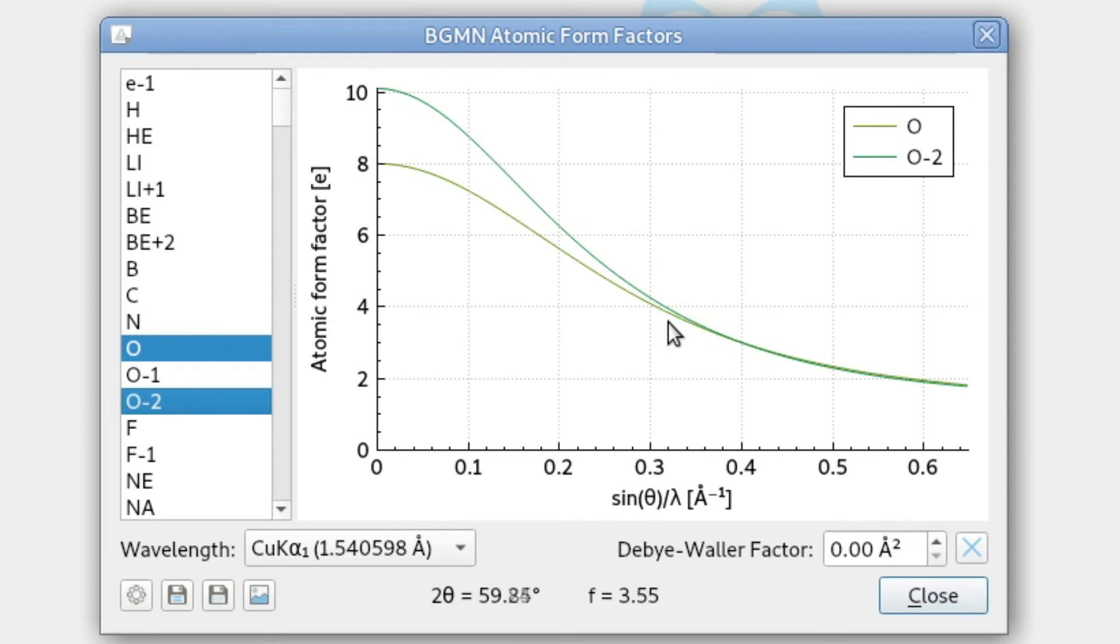They have the same scattering power, but at low diffraction angle we get less scattering from the neutral one because the charged one is negatively charged, so it contains two electrons more than the neutral oxygen, so we get more diffracted intensity from O minus 2.